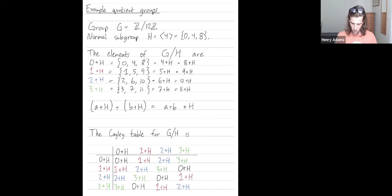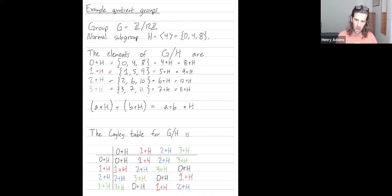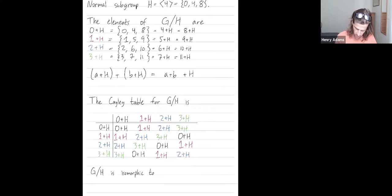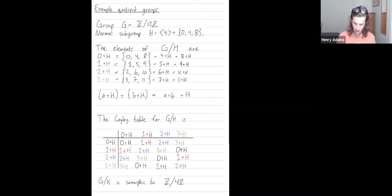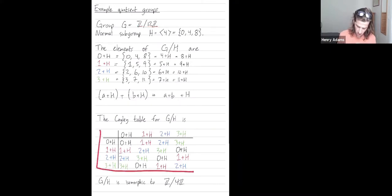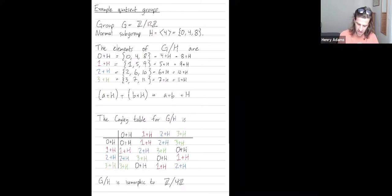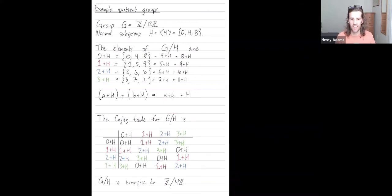So what this tells us is that in Z mod 12Z, this quotient group G mod H is isomorphic to Z mod 4Z. If I remove all the '+H's, this is just the Cayley table for Z mod 4Z. In a sense I'll make more precise in the next example, this tells us that inside the larger group Z mod 12Z, hidden in there, we have some structure that looks like Z mod 4Z — the symmetries of Z mod 4Z are present inside Z mod 12Z.